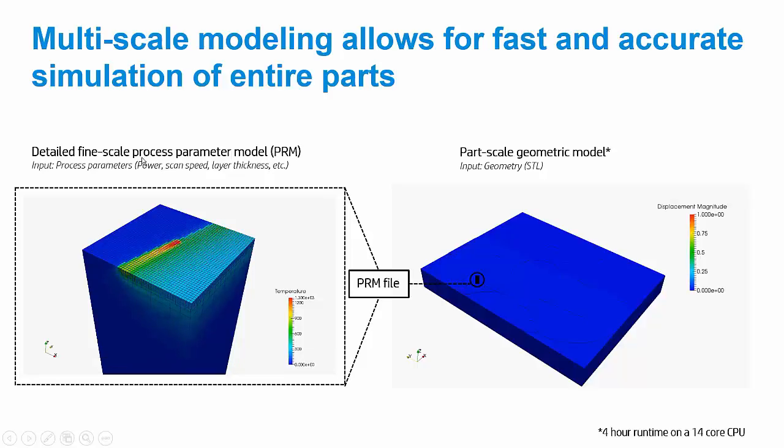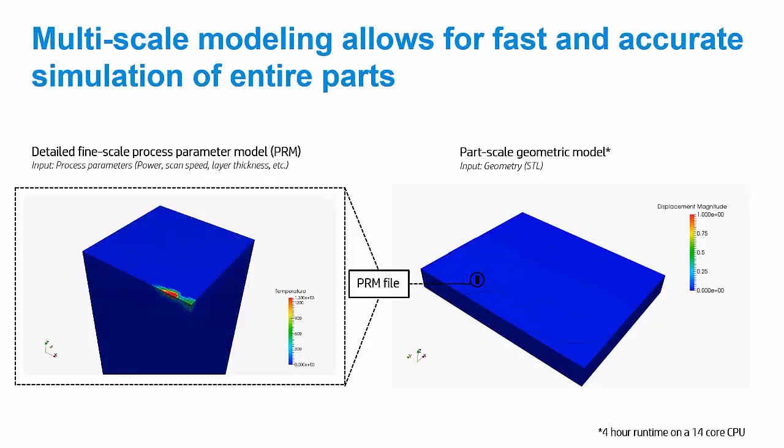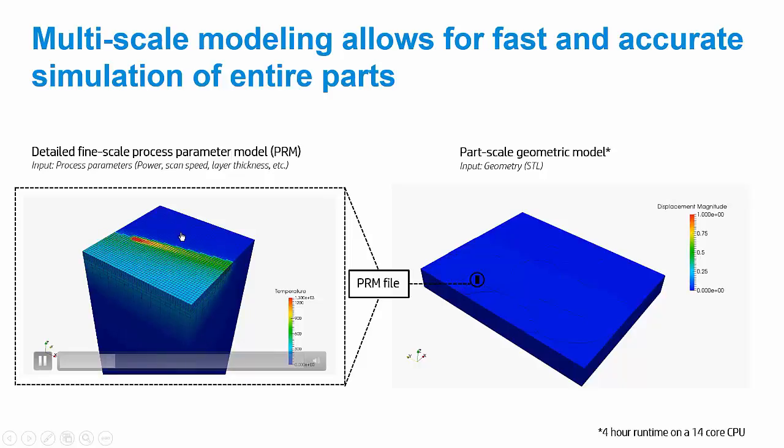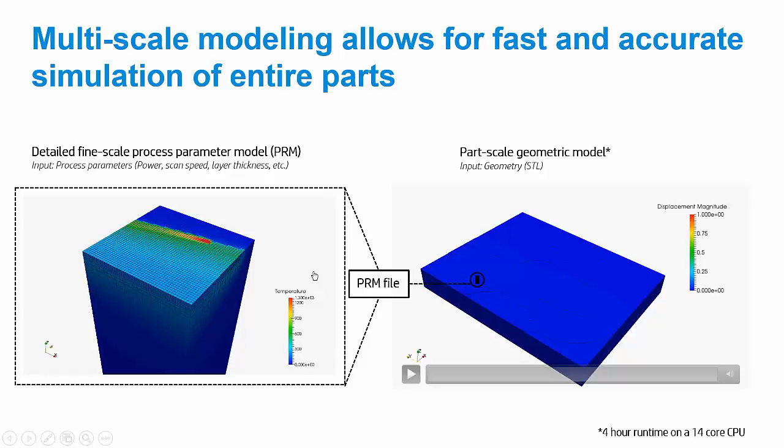We're going to get an understanding of how the individual layers mechanically interact with one another. Once we understand that for this combination of material and parameters, we're going to store that information in something that we call a process parameter file or a PRM file for short.